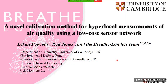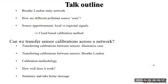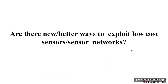Today I'll be talking about a novel calibration method for hyper-local measurements of air quality using a local sensor network. Here is a brief outline of my talk: I'll go into the BRETT London static network, then talk briefly on how we see pollution sources, then introduce the concept of local and regional signal and how that is exploited in our cloud-based calibration method. We'll look at questions around how we can transfer this calibration between sensors with an illustrative example, demonstrate that with actual data from the BRETT London deployment, and look at how well this calibration works by comparing with physical calibration methods.